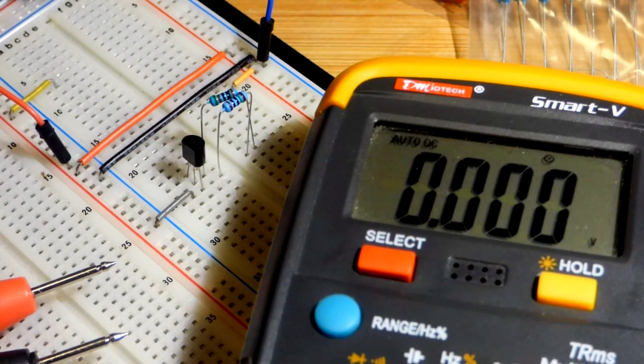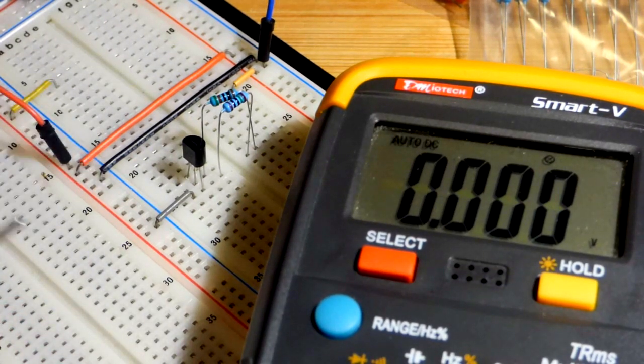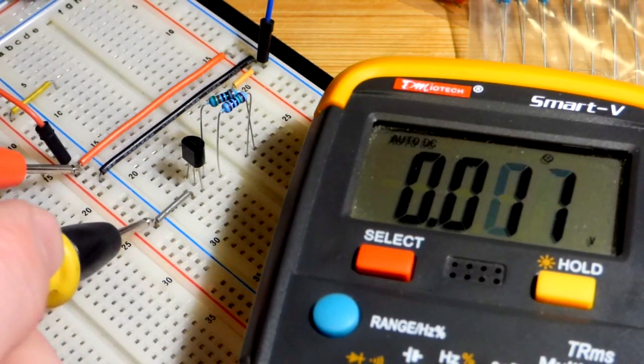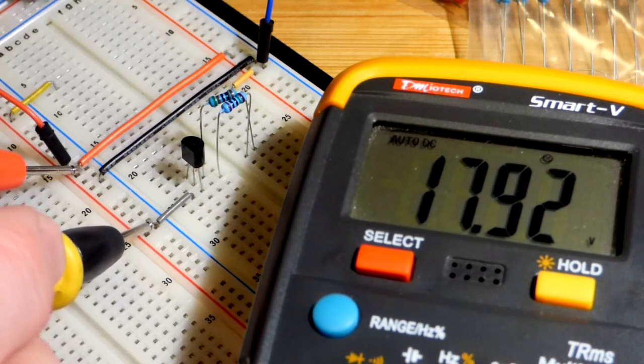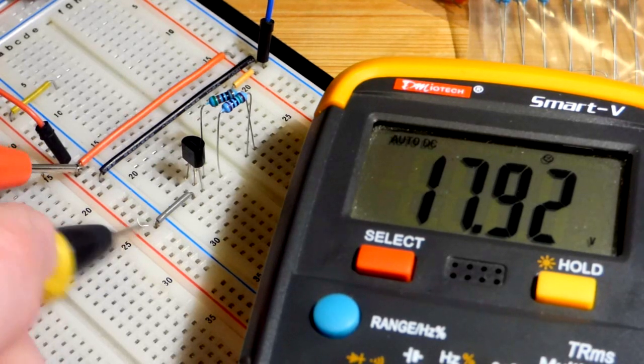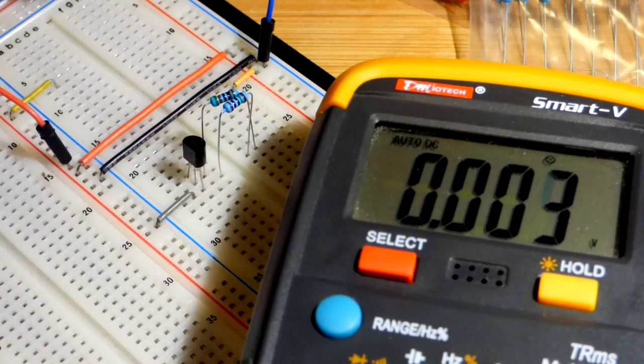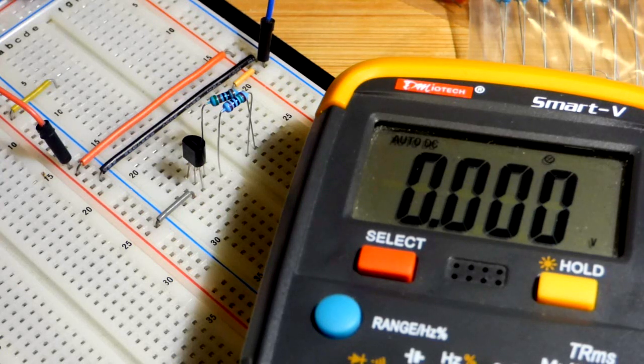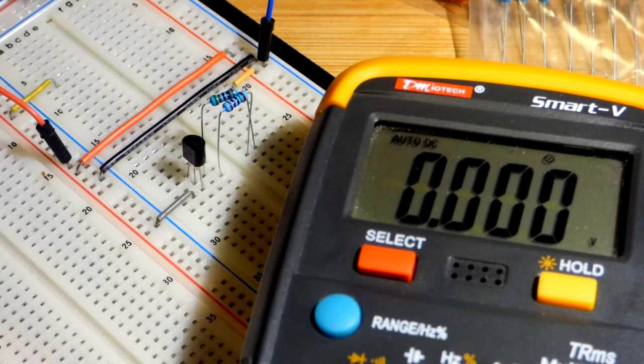So turn the meter on and measure first the voltage at the power supply rail. So right now, the V-plus pin is floating, and nothing is flowing through the component. So we have 18 volts at the rail. This high voltage doesn't matter, and according to the data sheet, this component is rated for up to 40 volts.